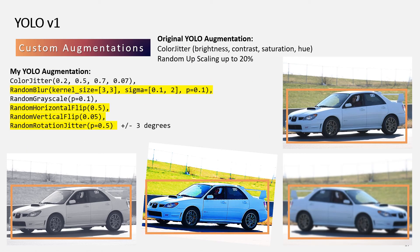The original YOLO used color jitter, which randomly adjusts brightness, contrast, saturation, and hue, as well as random upscaling up to 20%. In my implementation, I used color jitter, random blur, random grayscale, random horizontal flip, random vertical flip, and random rotation. The transforms highlighted in yellow are custom transforms I implemented myself. Specifically, the last three transforms change pixel locations, so you cannot use off-the-shelf PyTorch transforms without also transforming the bounding boxes — nothing is free in object detection.